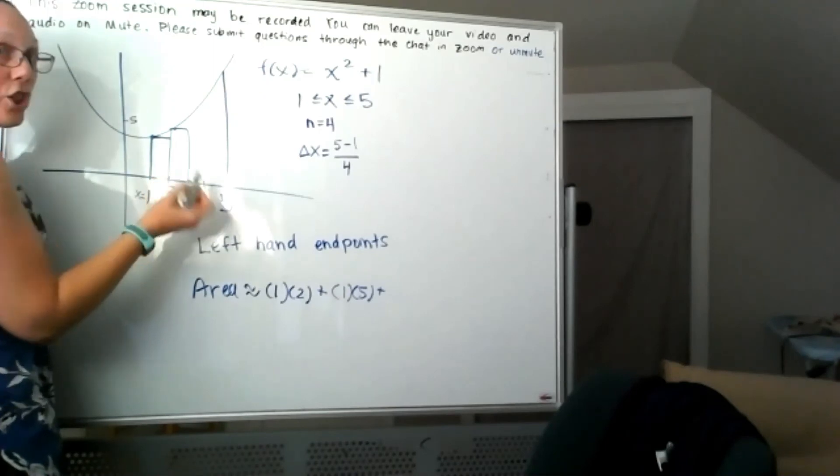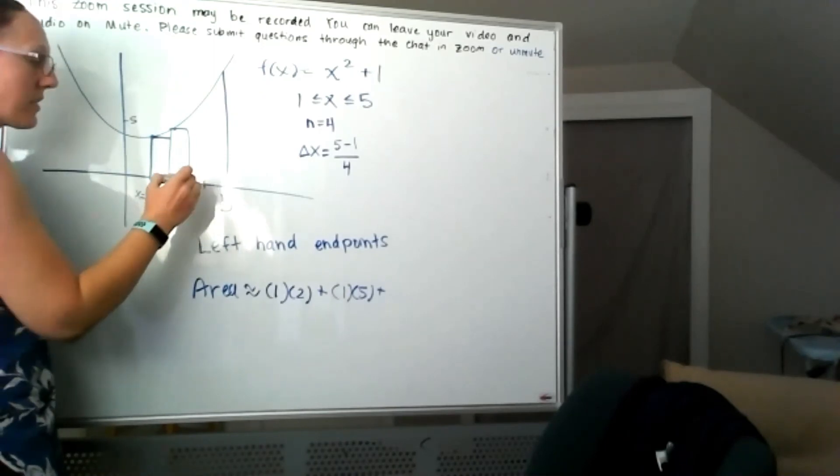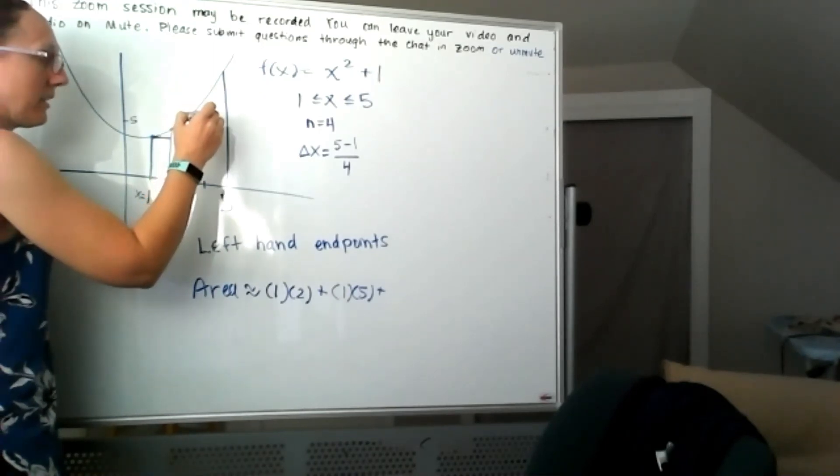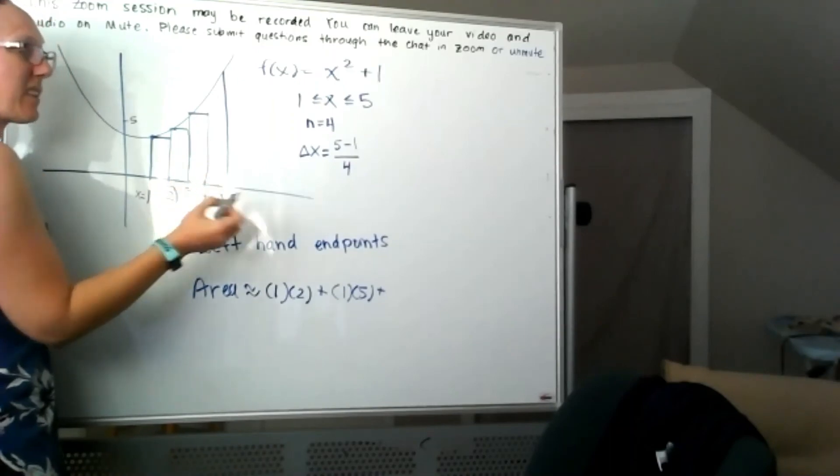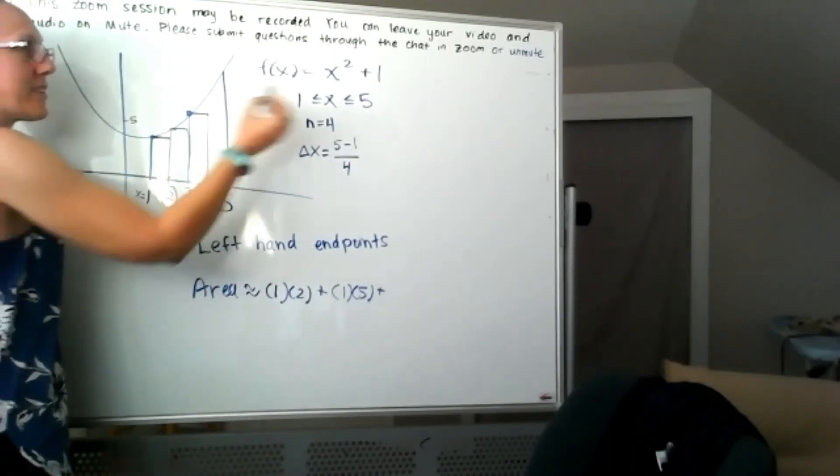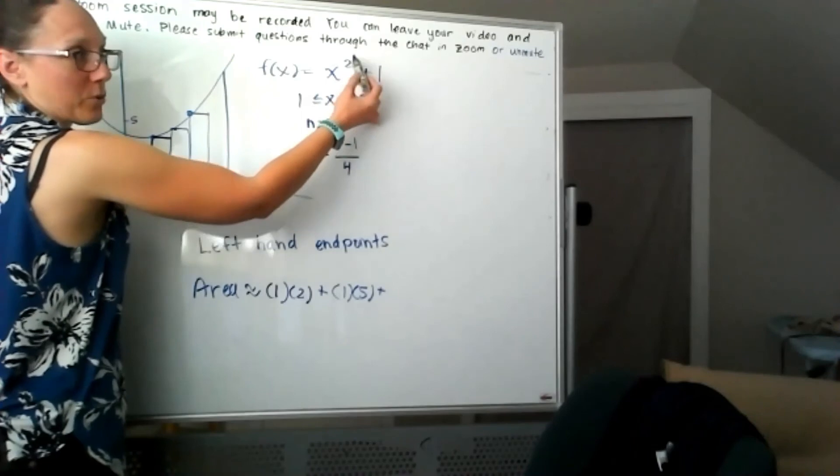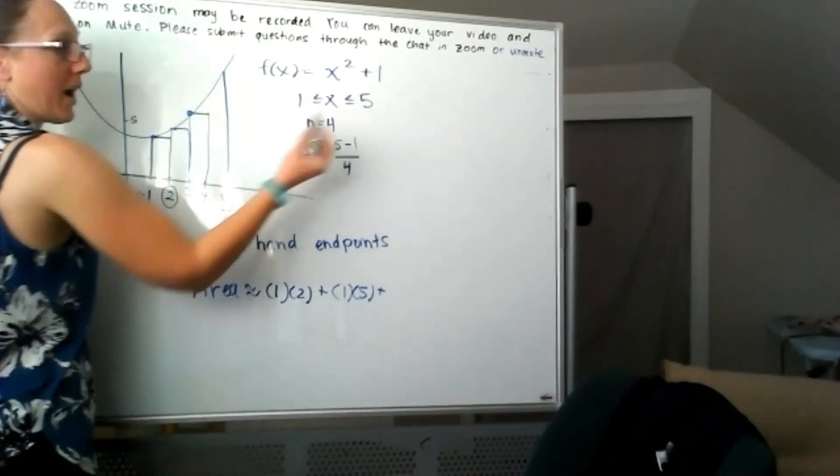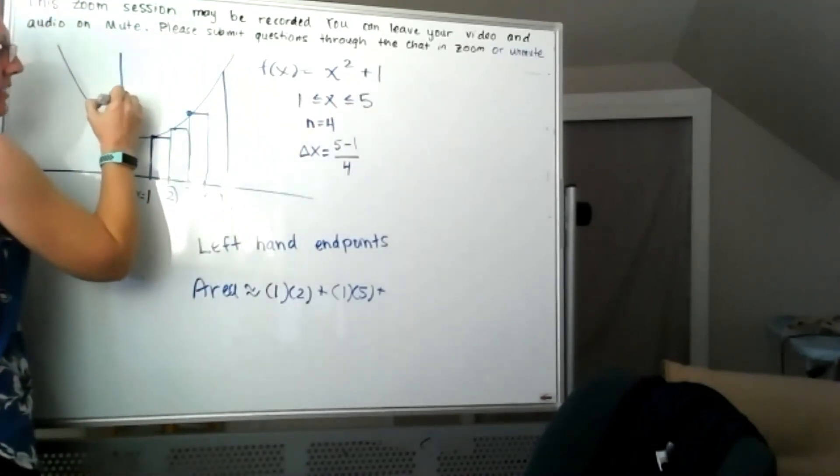That next rectangle, 3 is the x value that I'm going to use to come up with the height, again because I'm using the left-hand side. So when x is 3, I'll be at 3 squared plus 1, or a height of 10.